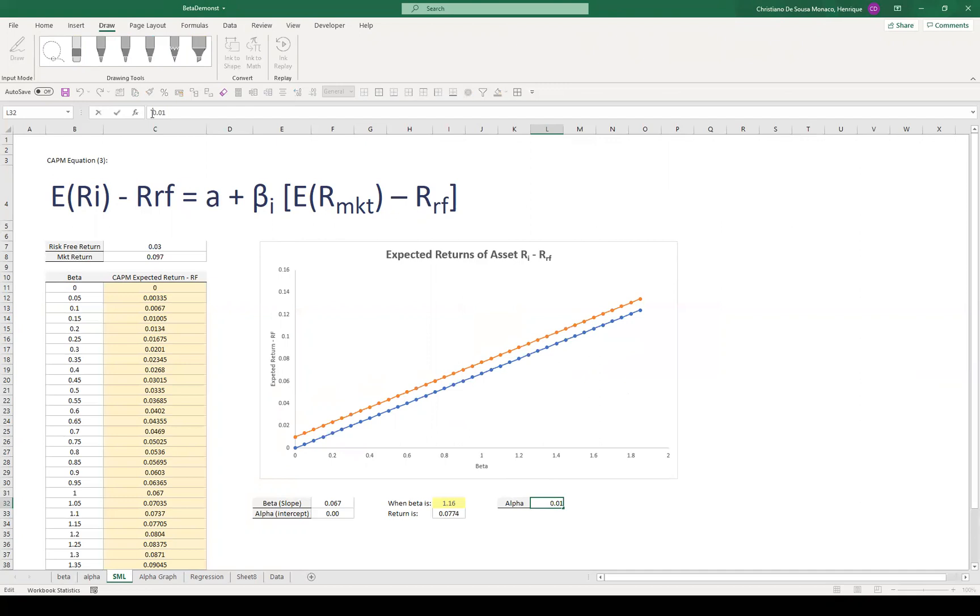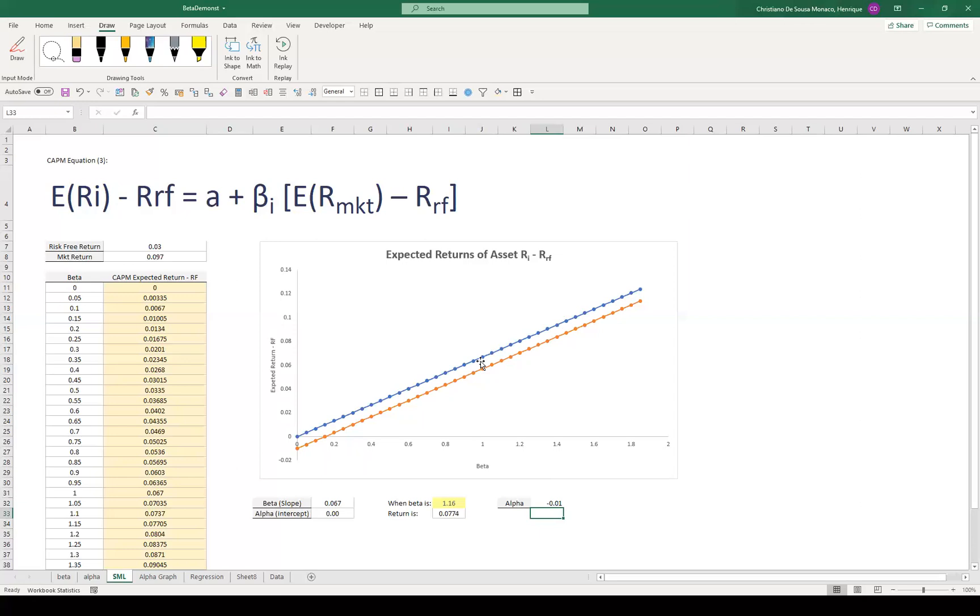If, on the other hand, alpha is negative, it means that for the same level of beta, we were expecting this asset to perform better, but it did not. So the intercept here is lower than zero, right? So this asset underperformed its benchmark.